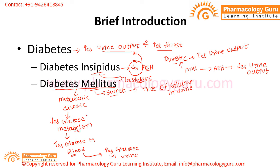Do you know how glucose is metabolized? Glucose is metabolized because of the hormone called insulin, which is secreted by the beta cells of the islets of Langerhans of the pancreas. Beta cells release insulin, which is responsible for glucose metabolism. The decrease in metabolism is because of deficiency of insulin or a defect in insulin activity.